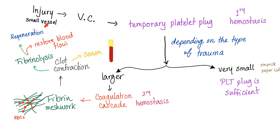Here is the story: you have injured yourself — a finger cut. Vasoconstriction occurs, followed by a temporary platelet plug — primary hemostasis. Depending on the size of the trauma and vessel, if it's large, we need the coagulation cascade — secondary hemostasis — to lay down a fibrin meshwork. RBCs get stuck between the fibrin fibers. After that, the clot contracts producing serum, which is defibrinated plasma. Then fibrinolysis dissolves the clot and restores normal blood flow.